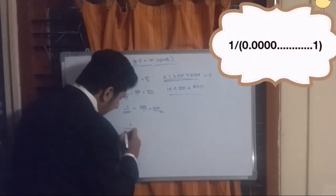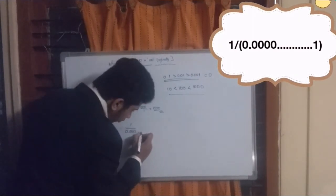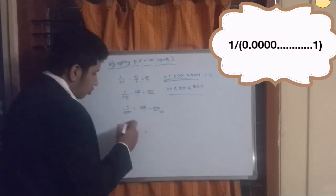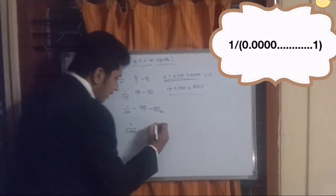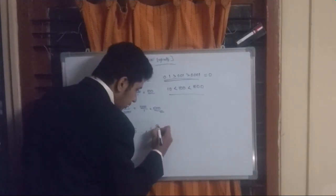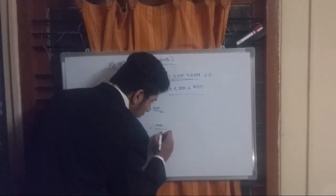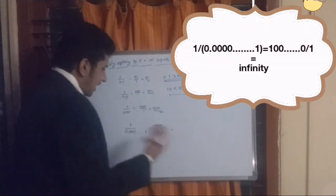After the decimal point, so 1 divided by 0.0000 up to infinity and after that a 1. Applying the same decimal rule, that's 10000 up to infinity divided by 1. So that is infinity, so we can directly write it as infinity.